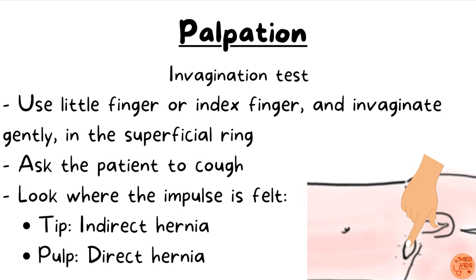The invagination test is performed with the patient in the supine position. Use the little finger or index finger to gently invaginate the superficial inguinal ring, directing the finger along the inguinal canal. Ask the patient to cough and note where the impulse is felt. The tip of the finger faces along the inguinal canal while the pulp faces the anterior abdominal wall. If the impulse is felt at the tip, it indicates indirect inguinal hernia (coming from the deep ring); if felt at the pulp, it indicates direct inguinal hernia (coming from the anterior abdominal wall defect).